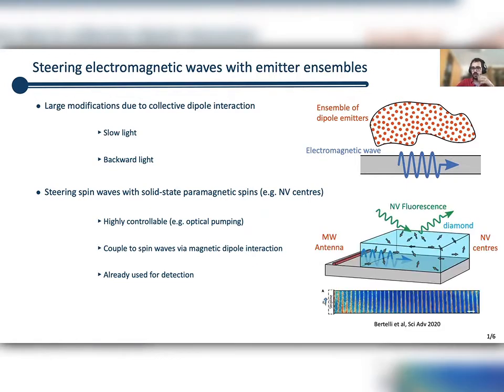Finally, these ensembles of NV centers have already been used for detection of spin waves. Maybe you're familiar with this work by the group of Toeno van der Sar, who is also a co-author of this work. They have a thin YIG film on top of which they place a microwave antenna to excite spin waves.